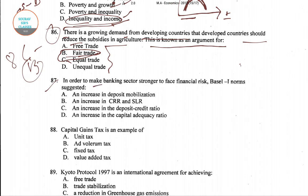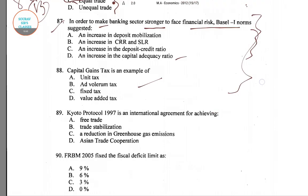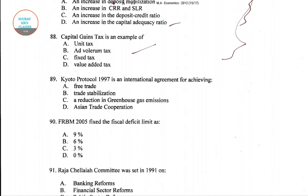Question number 87: In order to make the banking sector stronger to face financial risk, Basel norms — we will solve this question in another video. This question and another will have a separate session as they are special questions. So now we will directly go to question number 89.